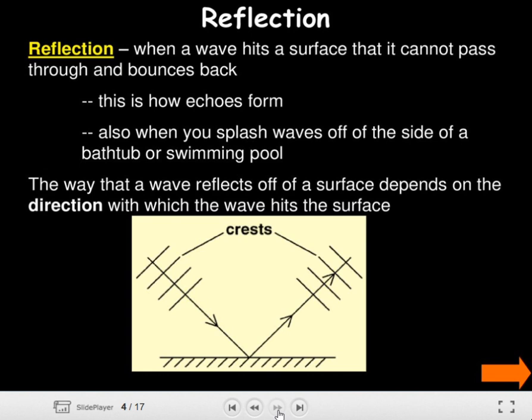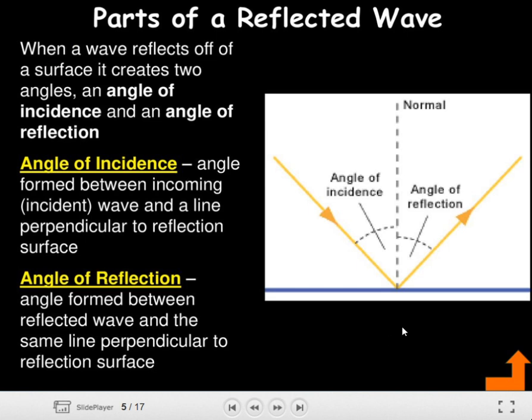The way a wave reflects off a surface depends on the direction with which the wave hits the surface. As you can see here, we have a reflective surface, an incident ray, and the reflected one. Those two are the crests of a reflected wave. When a wave reflects off a surface it creates two angles: an angle of incidence and an angle of reflection.